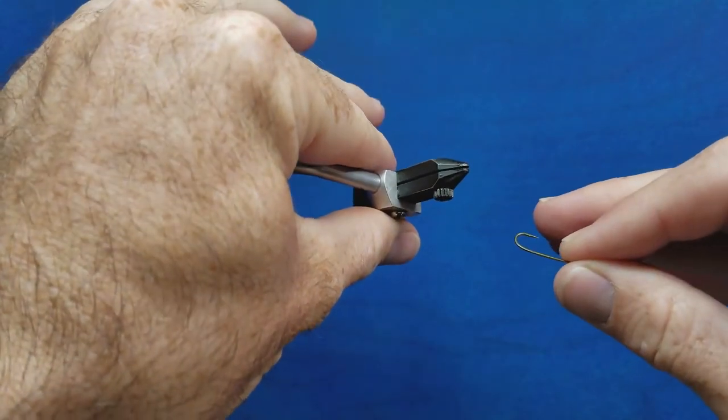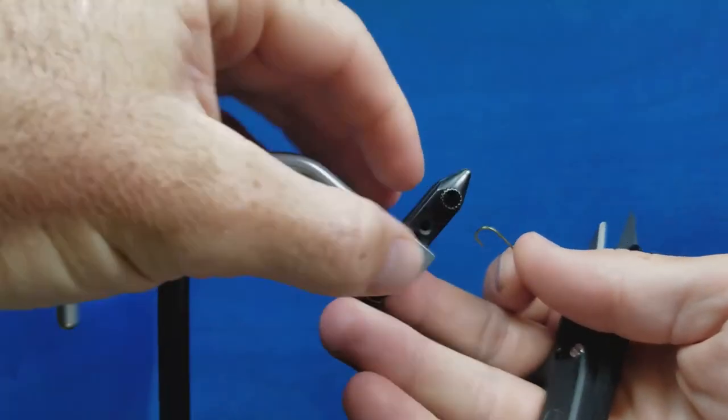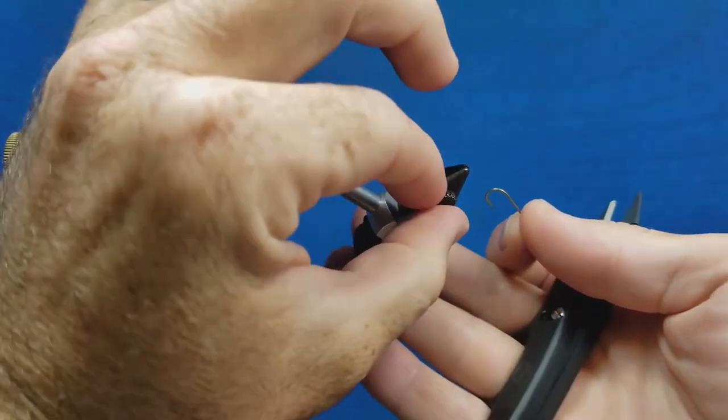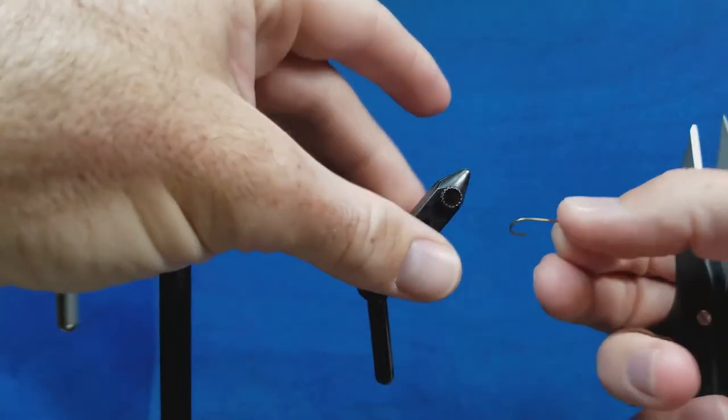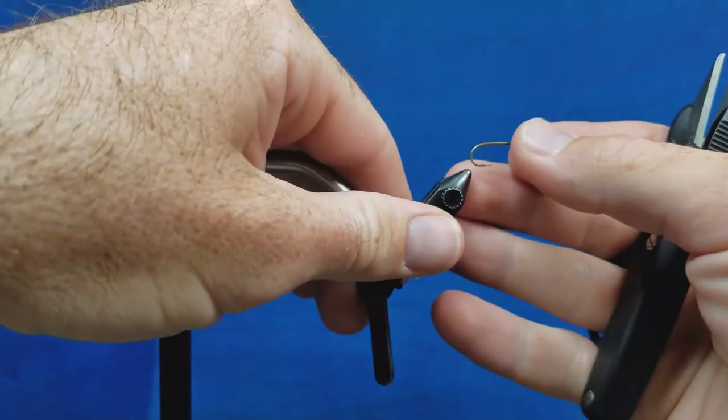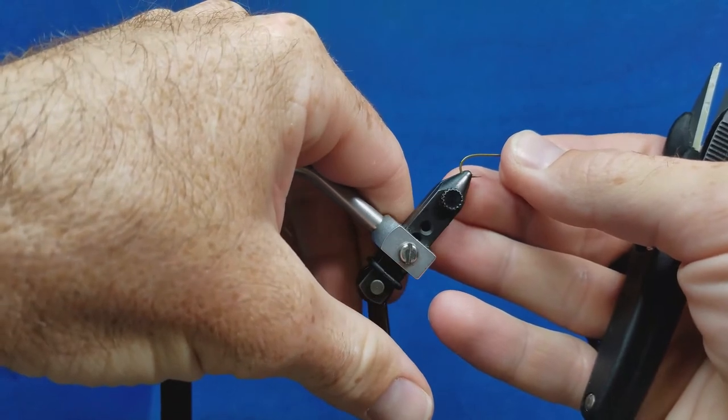When I set this hook in the jaws, most jaws on most vises are adjustable. This particular vise has a pivot point here that allows me to either slightly open or close the jaws. And I want that opening to be just wide enough for me to slide the bend of the hook into the opening of the jaws.